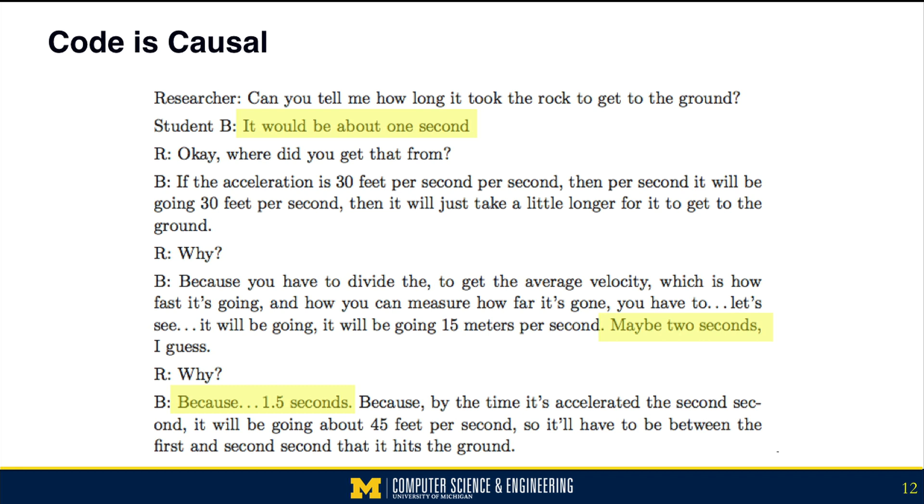As you look at what he's saying, he talks about what happens in the first second, and then what happens in the second second. And then you realize, oh no, it's already gone too far - it'll hit the ground around 1.5 seconds. Then you realize this kid's running that tick loop in his head. He's going second by second, simulating what's happening as the rock is falling. That's a different model. He's not trying to solve the equation. He's actually got a dynamic model about what's going on when the rock is falling.